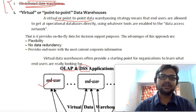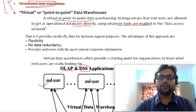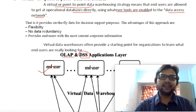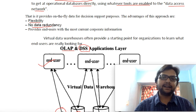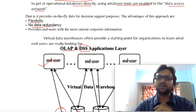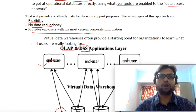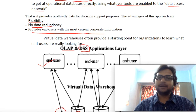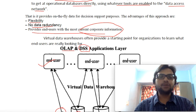A virtual or point-to-point data warehouse strategy means that end users are allowed to get operational data directly from any specific points, using whatever tools we want. This technique is called a data access network. The advantages of using this virtual data warehouse are: it is flexible, there is no data redundancy since we are directly connecting users with specific data at specific locations, and it provides end users with the most current corporate information rather than emphasizing historical data.